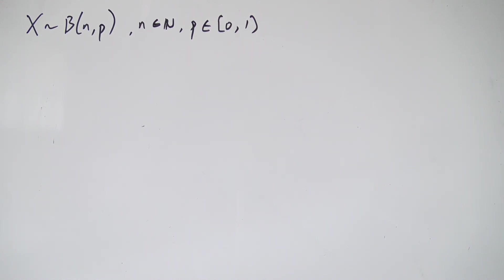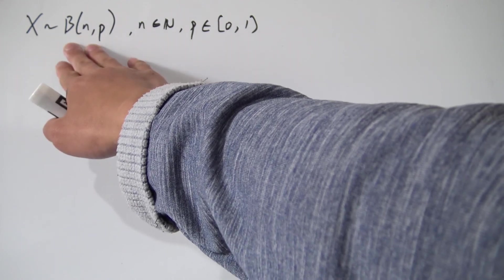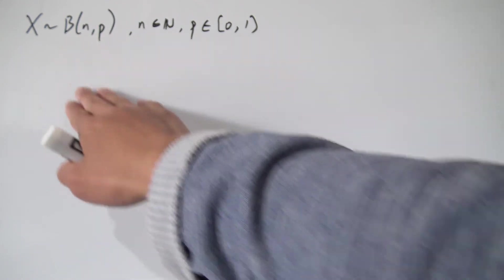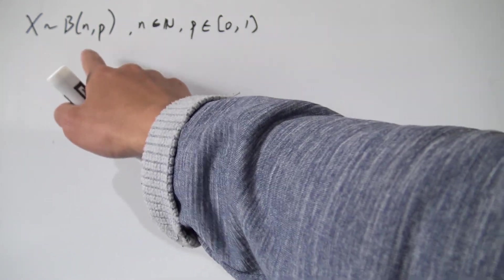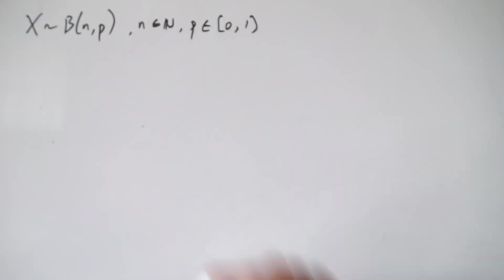Hello everybody, and today we're going to be deriving the formula for the expected value of a binomial probability distribution. We have our random variable X which follows a binomial probability distribution with two parameters, N and P, where N is the number of trials and P is the probability of getting a success.